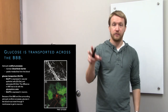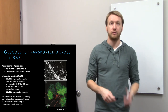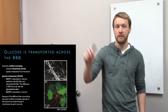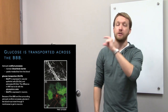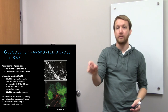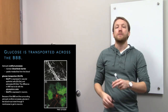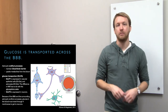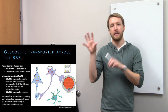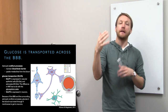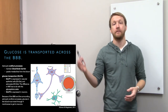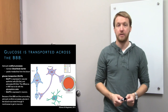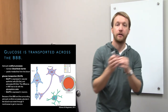Astrocytes send out their endfeet processes to help maintain the blood-brain barrier, and on those processes they have glucose transporters — so they're connected to the blood and also connected to neurons. The illustrations show GFAP staining with astrocytes surrounding blood vessels, and astrocytes very close to neurons. A cartoon shows the astrocyte putting an endfeet process down to pick up glucose from the blood, and it can shuttle that over to neurons. It can also break glucose down into pyruvate and shuttle that over as well.